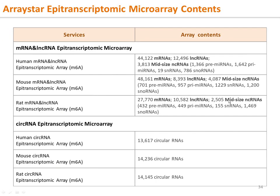Here are the specifications of ArrayStar epitranscriptomic microarrays. We have epitranscriptomic microarrays for human, mouse, and rat species, covering mRNA, lncRNA, and mid-sized non-coding RNA classes. We also have circular epitranscriptomic microarrays that target specific circular junctions for the most sensitive, accurate circular RNA m6A modification profiling — not nearly possible by MeRIP-seq.